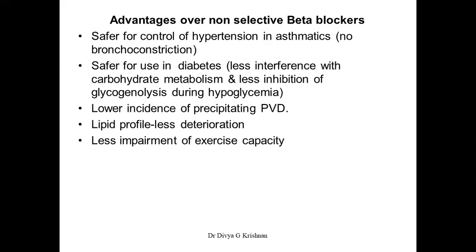In the case of non-selective beta blockers, I already told you they bring about a fall in BP much later — only after chronic administration. Now the advantages over non-selective beta blockers: they are safer for control of hypertension in asthmatics. Non-selective beta blockers cannot be used in asthmatics because they can cause bronchoconstriction. If you have a patient with hypertension and bronchial asthma, you would prefer to use a cardioselective beta blocker.